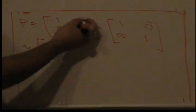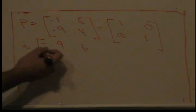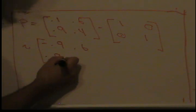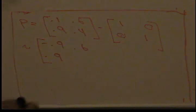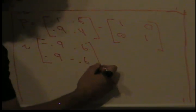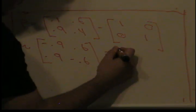When we do this, we get 0.1 minus 1 is negative 0.9. Then we get 0.6 minus 0, it's still just 0.6. Then we get 0.9 minus 0, which is still 0.9. Then we get 0.4 minus 1, which is negative 0.6. So this over here is our P minus our identity matrix.